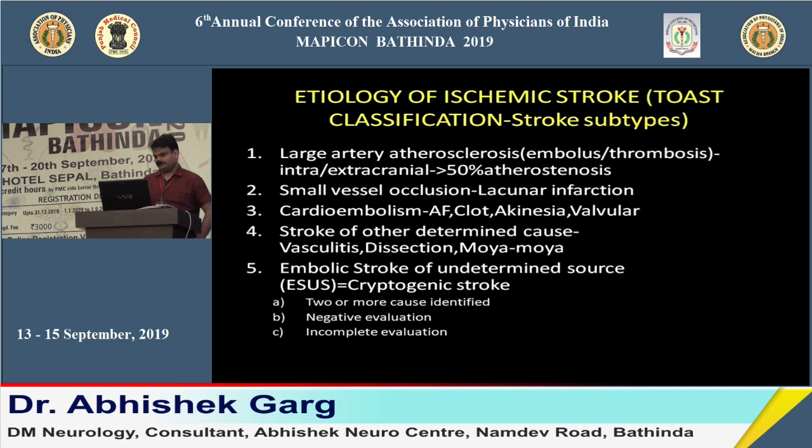When a patient presents with sudden onset focal deficit and CT shows hypodensity or is normal — confirming ischemic stroke — we categorize the patient into one of five etiological categories, as these represent the probable etiologies of ischemic stroke.